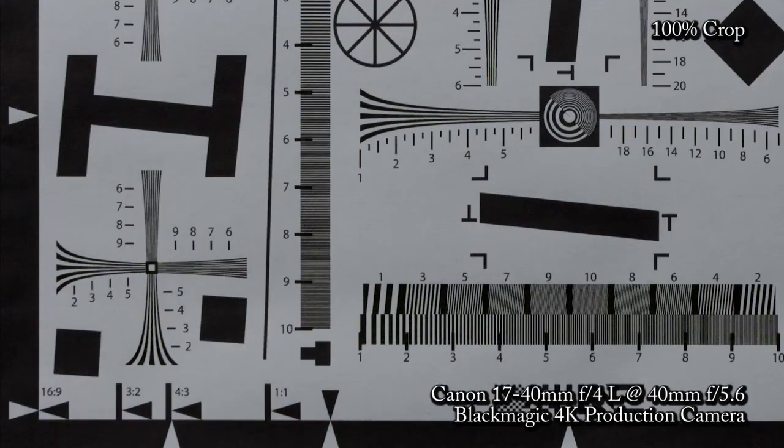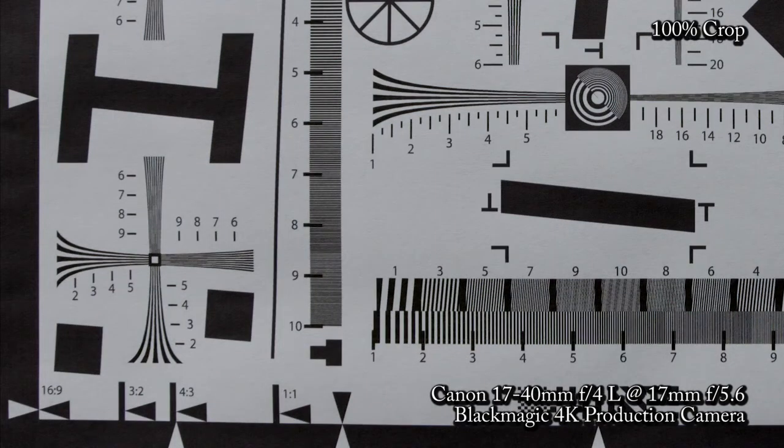The 17-40 shows that 4K despite only being 8MP demands good glass. Distortion isn't too bad at 40mm but it's very obvious at 17mm and the worst in our test so far. Resolution wise it's just not that sharp either end of the lens. Across the image it's not terrible at the centre but it's not great either and it degrades as you look to the corners.